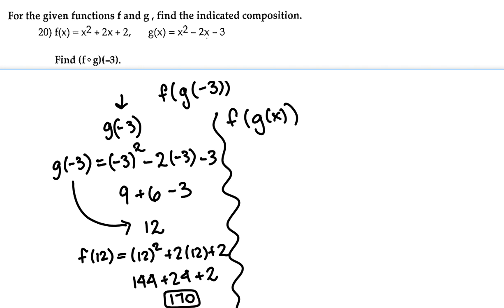Now let's try the other way. We're going to take g of x and plug it into f of x. We start by writing f of x, but instead of writing each x we write g of x. For every x I'm going to plug in x squared minus 2x minus 3.